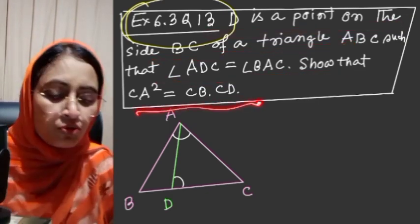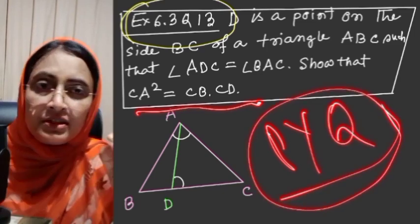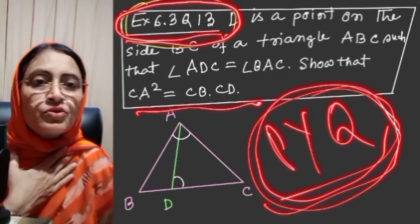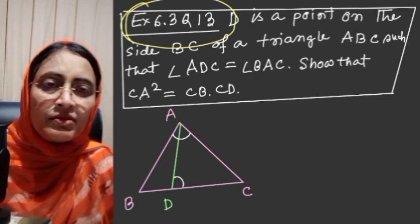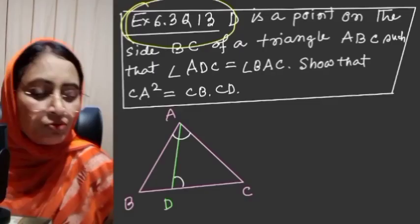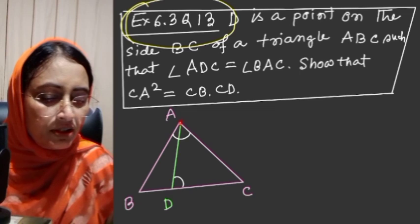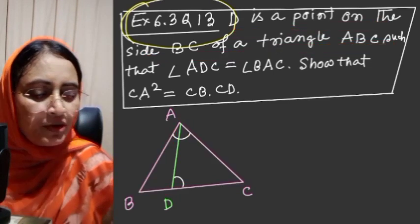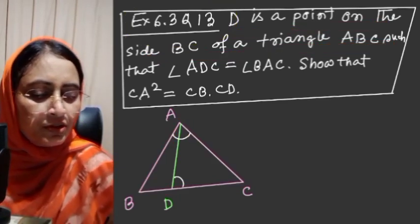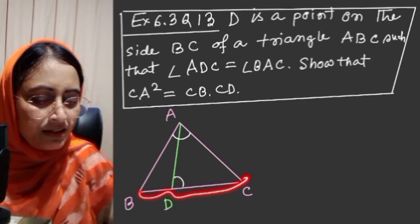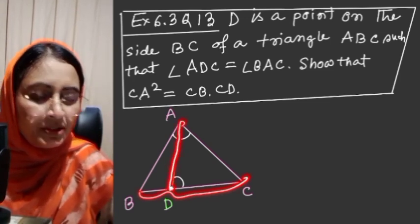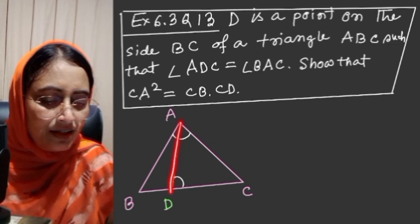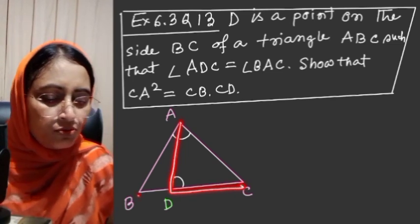If the question doesn't have a figure, try to draw it yourself. We have a triangle ABC. D is a point on side BC. Join AD. We're given that angle ADC is equal to angle BAC.